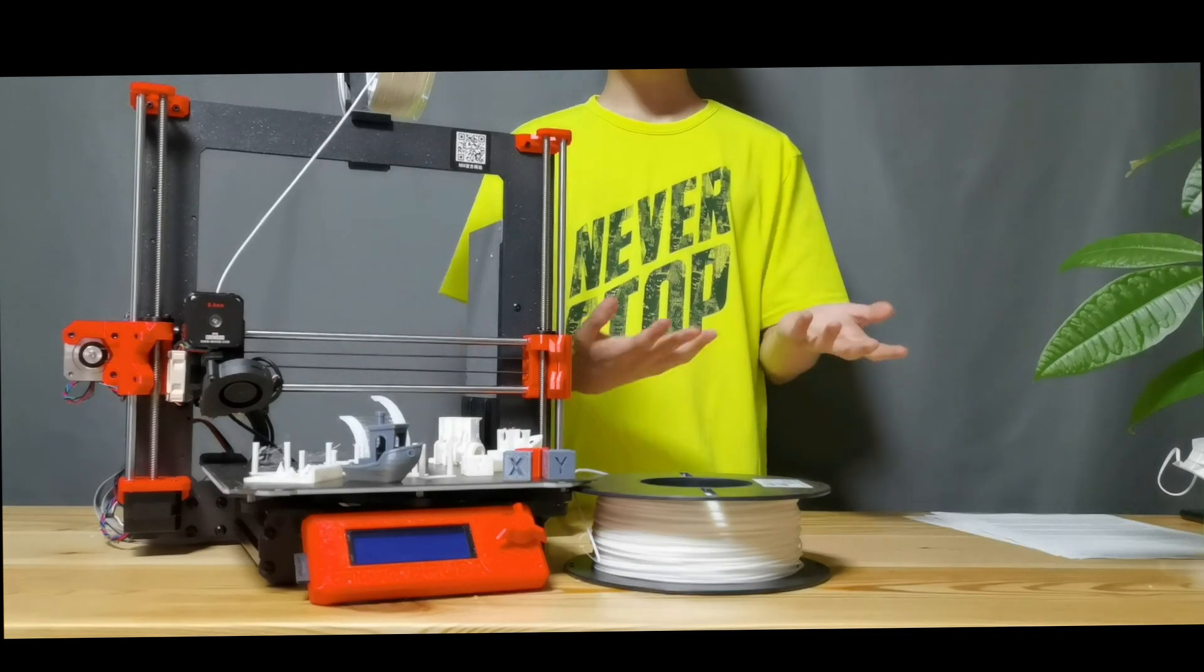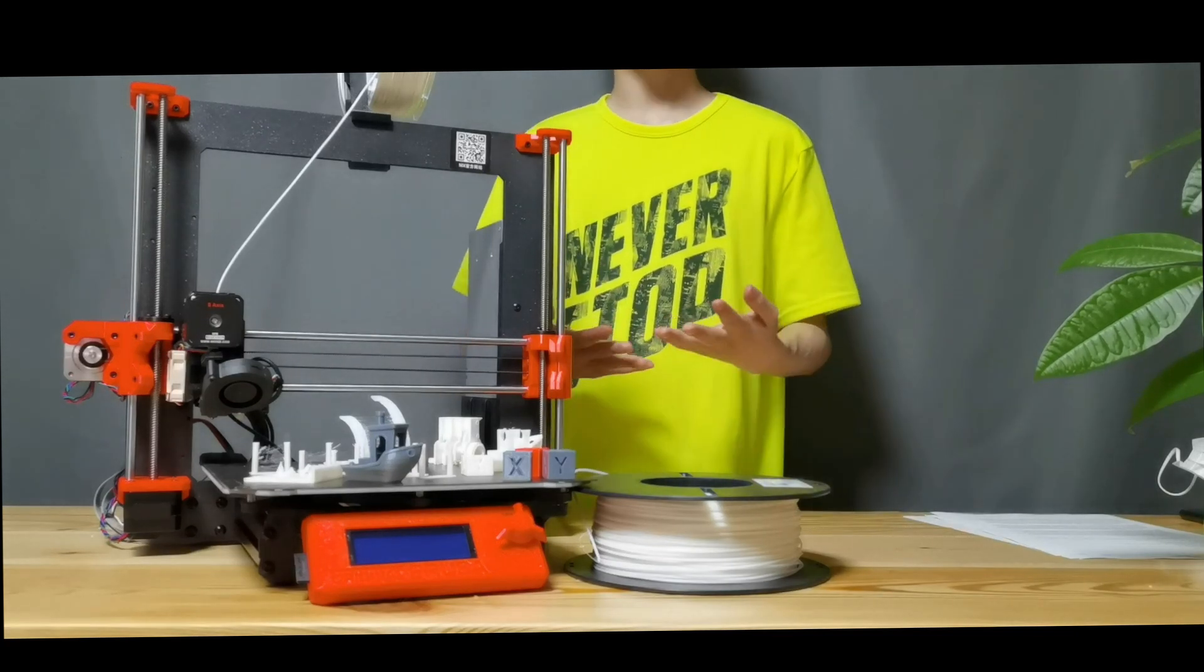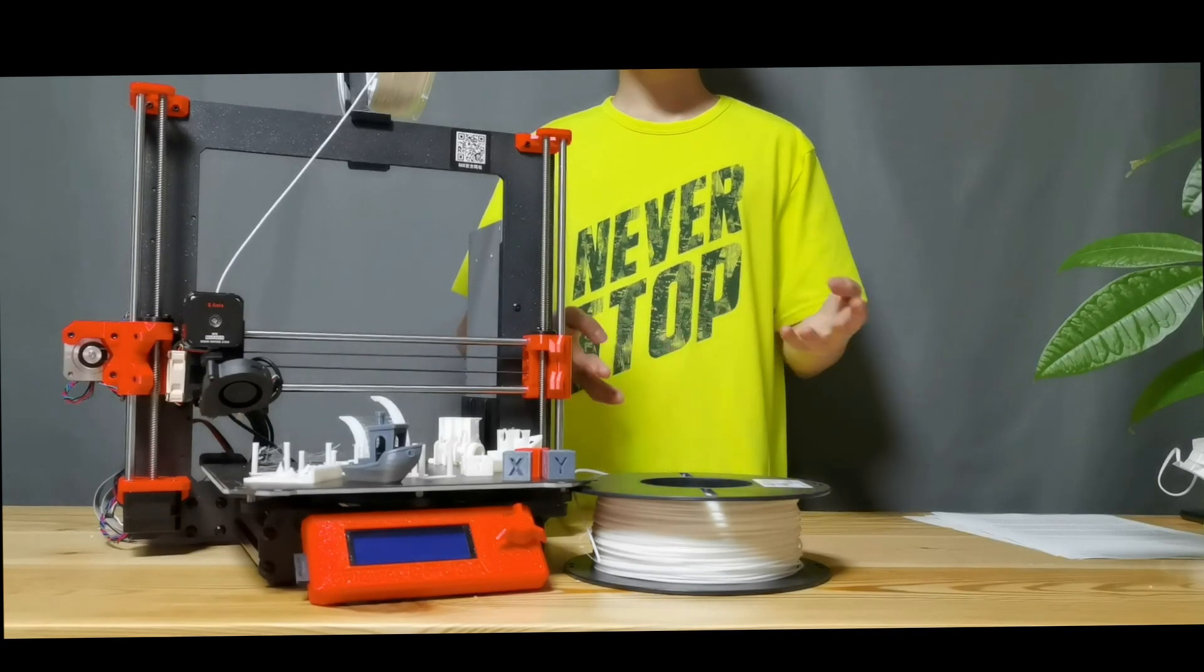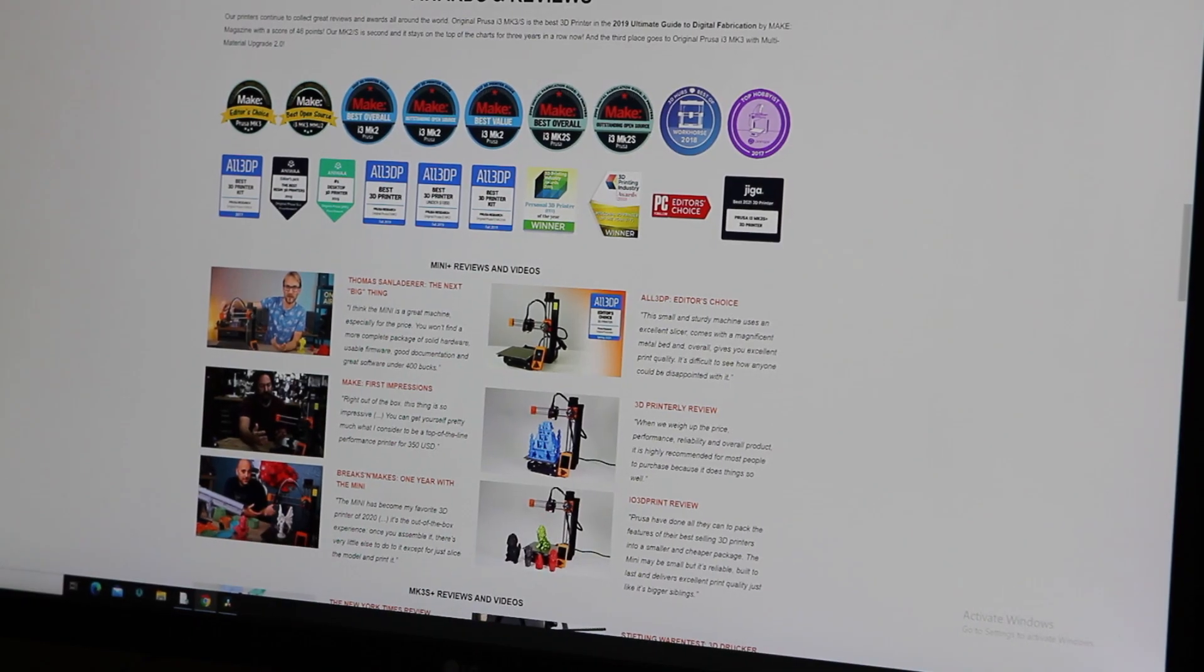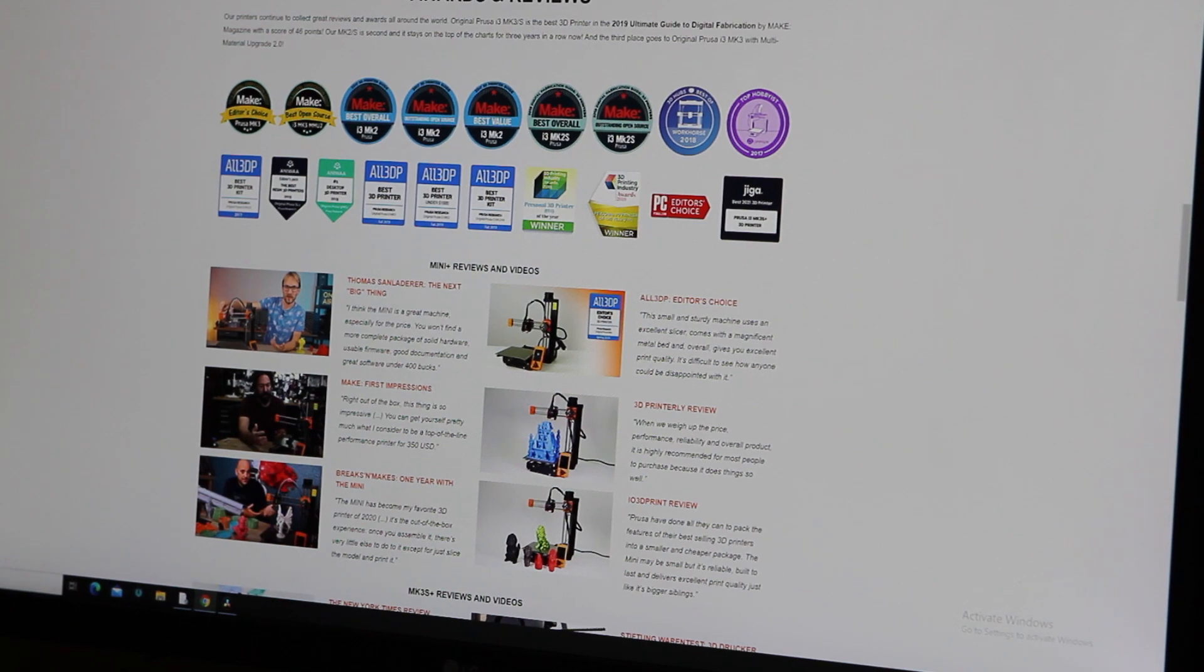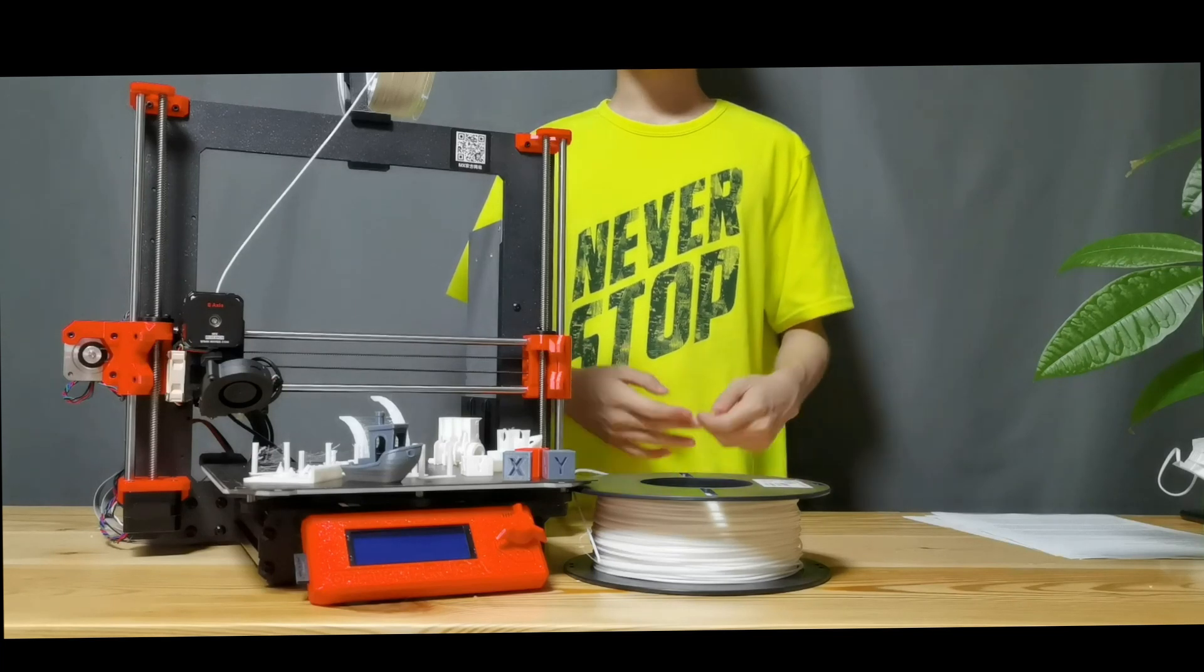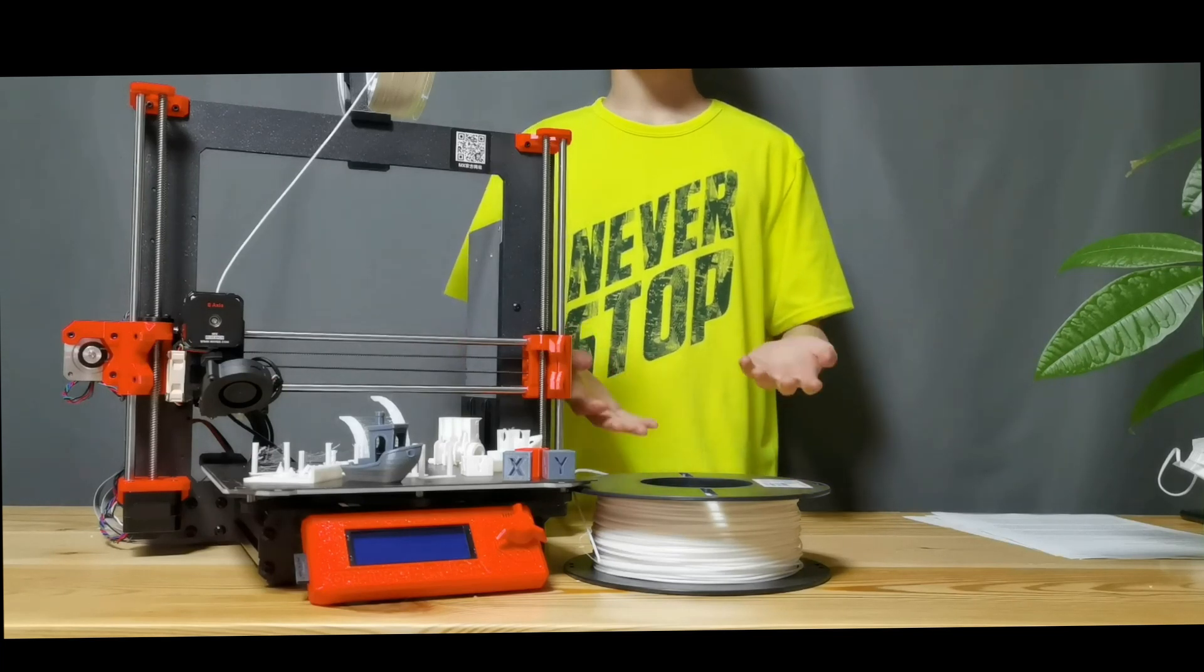The printer beside me is the very popular Prusa i3 Mark III S. You may recognize it because it's one of the best selling 3D printers in the world. Well, this isn't an original Prusa i3 Mark III S. It's a clone that I bought for $590.